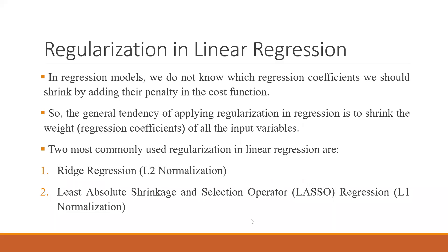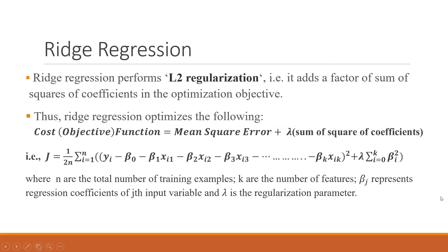In the last lecture, we started the regression topic and discussed Ridge regression. Regularization is required to remove overfitting from our model. There are two types: L1 and L2. L2 corresponds to Ridge and L1 corresponds to Lasso. Lasso's full form is Least Absolute Shrinkage and Selection Operator. These are the key things you need to remember.